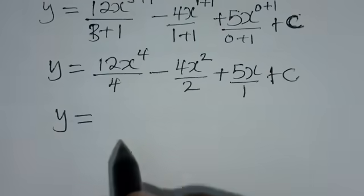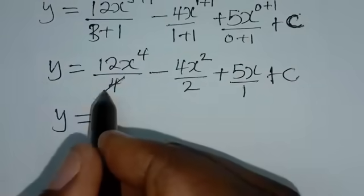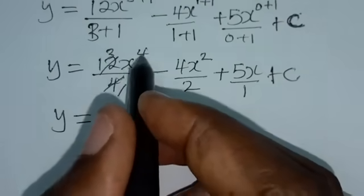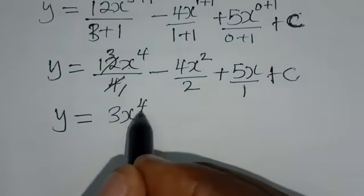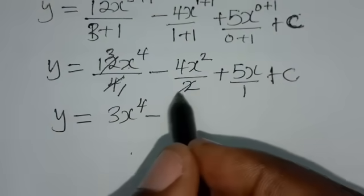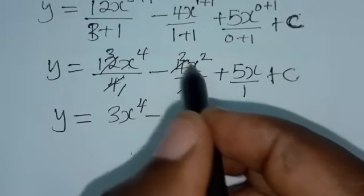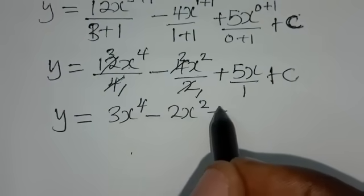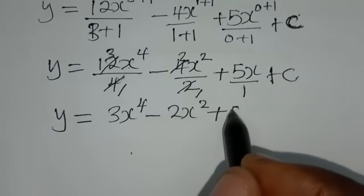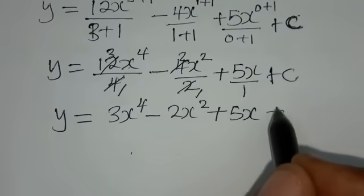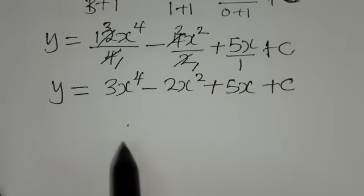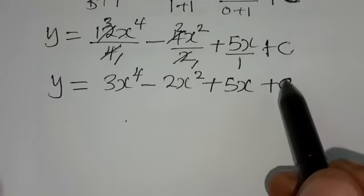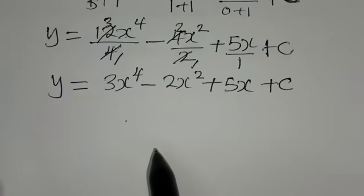So y is equal to 3x to the power 4 — since 12 divided by 4 is 3 — minus 2x squared — since 4 divided by 2 is 2 — plus 5x, plus C. This is the equation we are told to find, but at the moment we don't know the value of C.